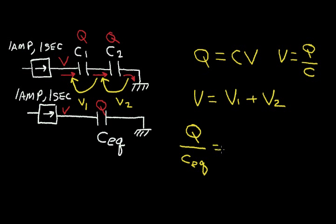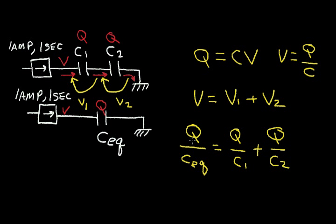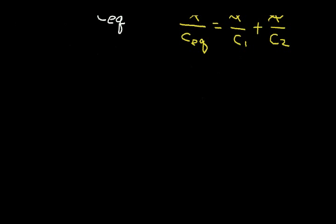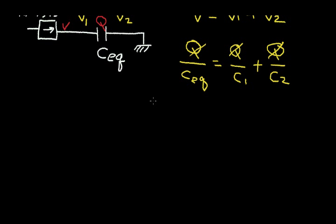That equals V1, which I can write as Q divided by C1, plus V2, which I can write as Q divided by C2. Now notice that the charges all cancel out, and I'm left with 1 over C_EQ equals 1 over C1 plus 1 over C2.